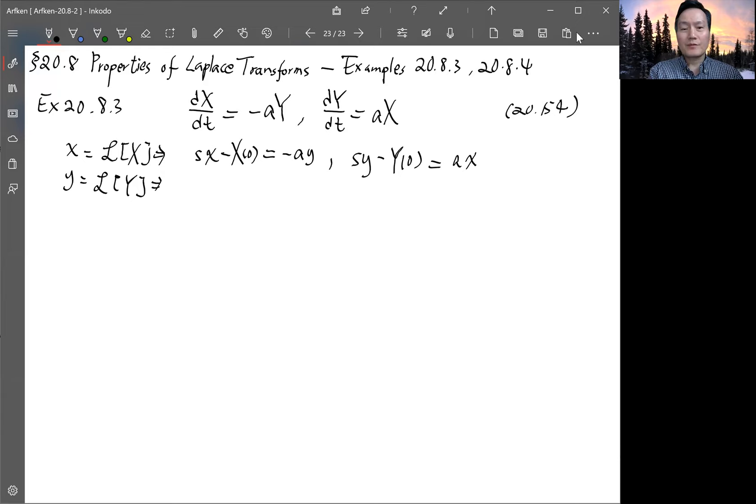So we can solve for x and y for these two equations. So to do that, we can multiply this equation by S. So S² times little x minus Sx₀ equals to minus a times Sy, which is S² plus ax plus y₀ times a.